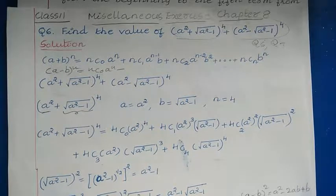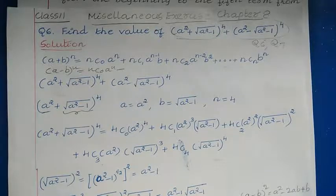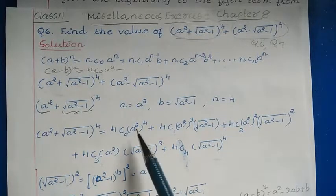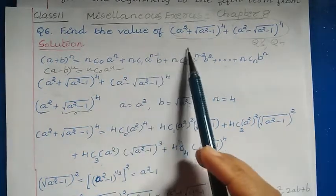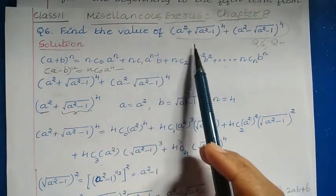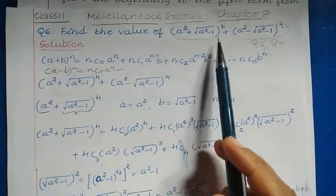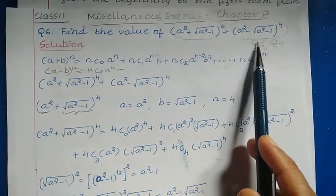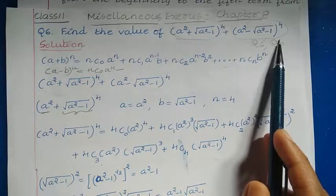In this video I am going to explain about Macmillan's exercise on chapter 8, binomial theorem, question number 6 and 7 solution. Question number 6: find the value of (a² + √(a²−1))⁴ + (a² − √(a²−1))⁴.